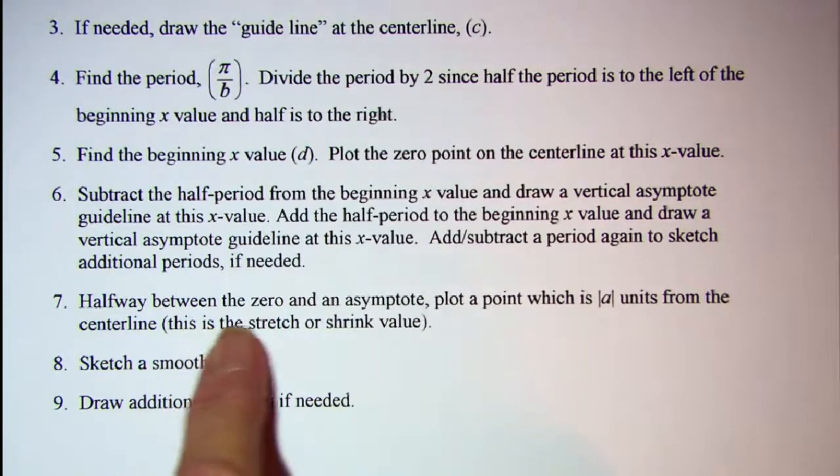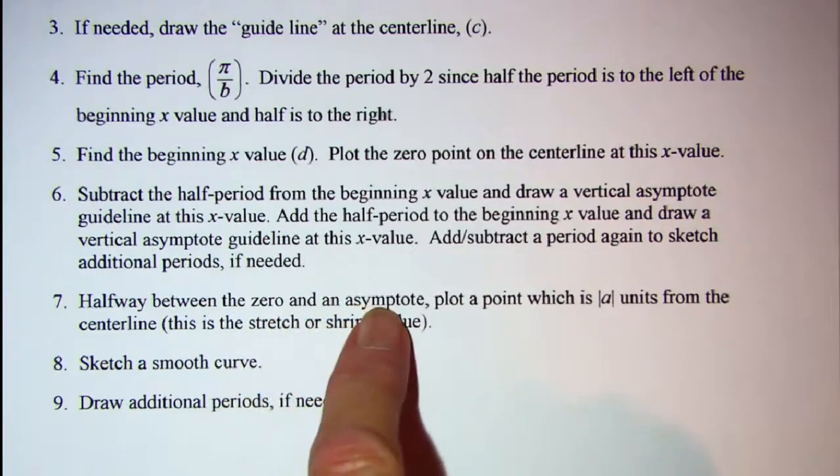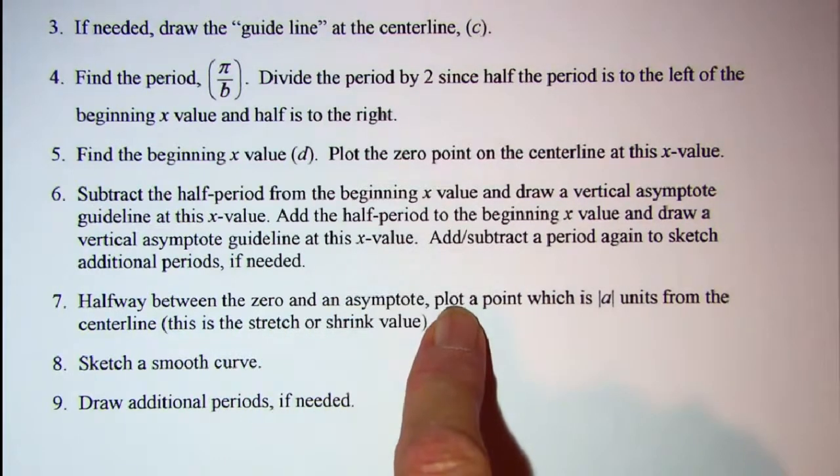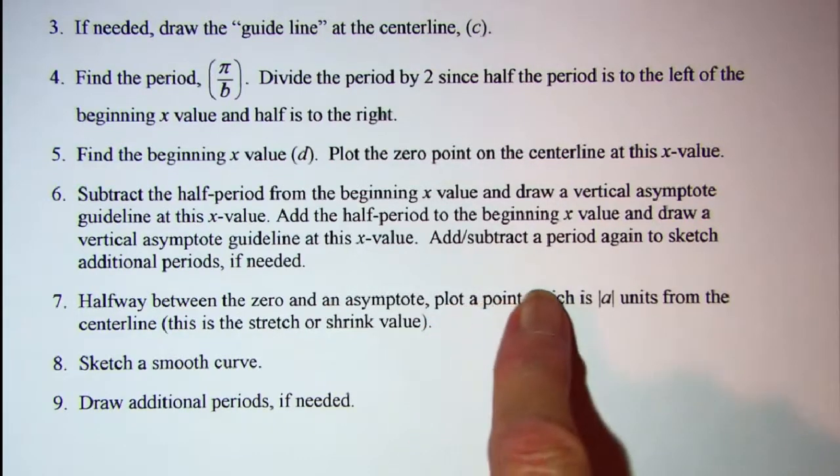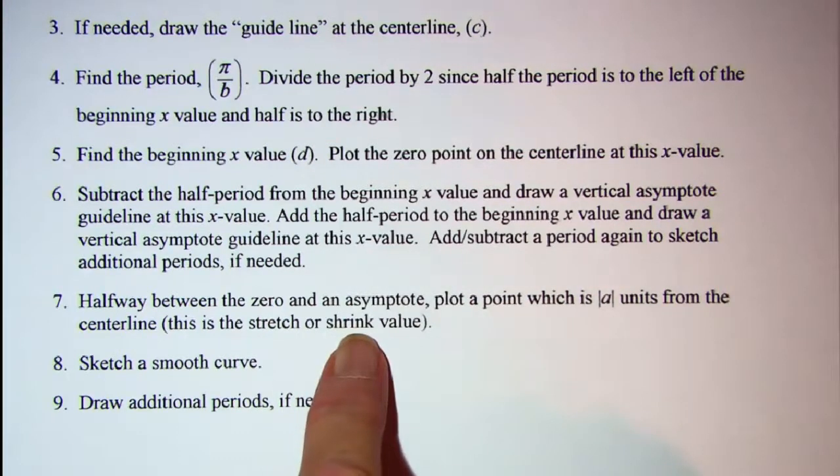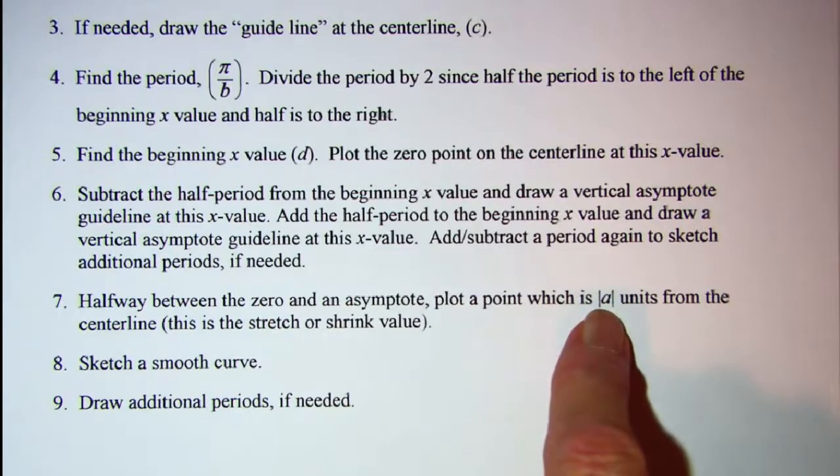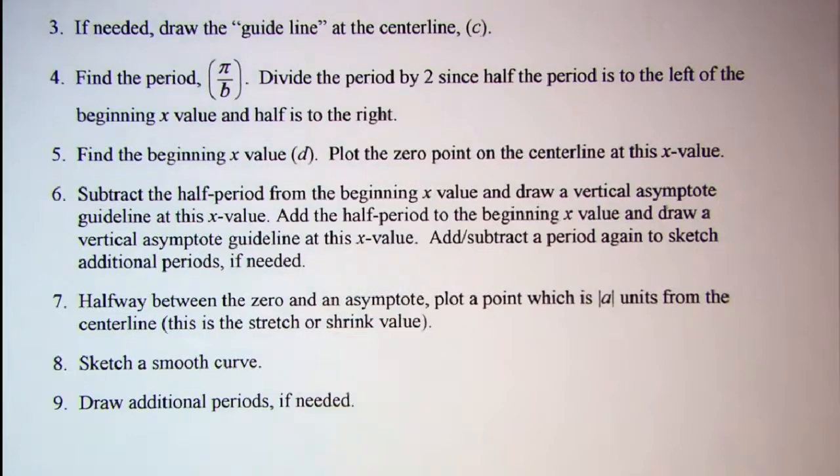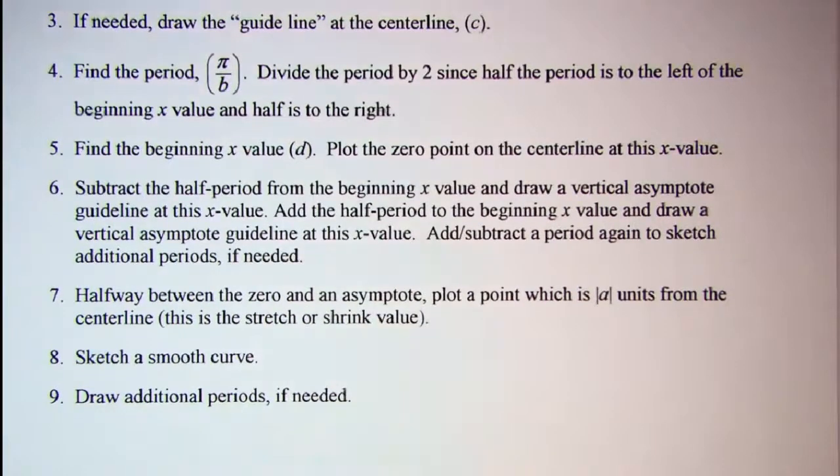Then halfway between the zero and the asymptote, that represents the x value where your tangent is 1 on the basic tangent curve. So for the ones that we will be graphing we will plot our point A units from the center line. So if we have an A value other than 1, we will put a point A units away from the center line and then sketch a smooth curve through those points.